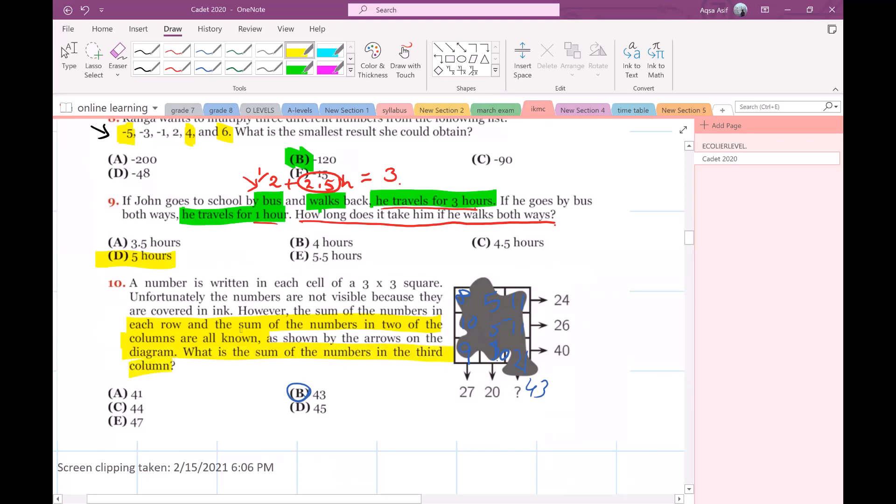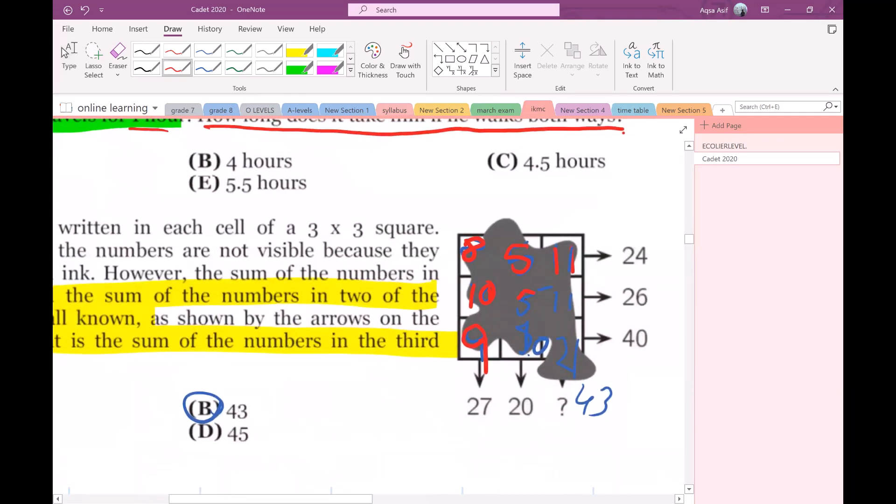So what we'll do is apply trial method. I will put random numbers: 8, 10, and 9 gives me 27. Then I will complete the grid: 8, 5, 11 gives me 24. Since I can repeat the numbers: 10, 5, 11. And here I will write 5 plus 5 is 10, 10 plus 10 will be 20.